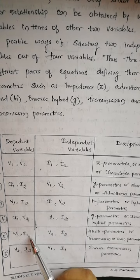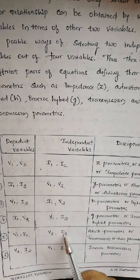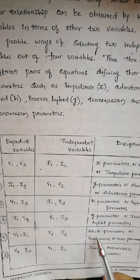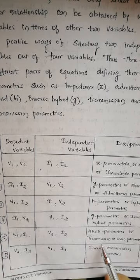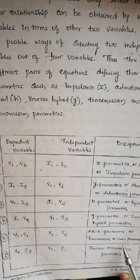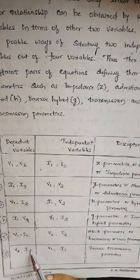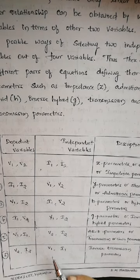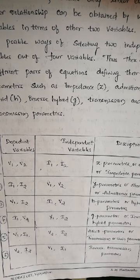If V1 and I1 are the dependent variables and V2 and I2 are the independent variables, those parameters are called ABCD parameters, transmission parameters, or chain parameters. Finally, if V2 and I2 are the dependent variables and V1 and I1 are the independent variables, those parameters are called inverse transmission parameters.